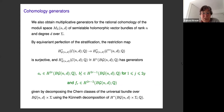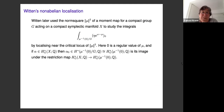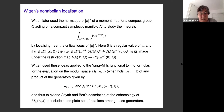Witten took this analysis further, using the norm squared of the moment map first in the compact finite-dimensional case and then for the Yang-Mills functional, and showed that you could get a complete set of relations between these generators, extending the description that Atiyah and Bott gave of the cohomology of the moduli space.